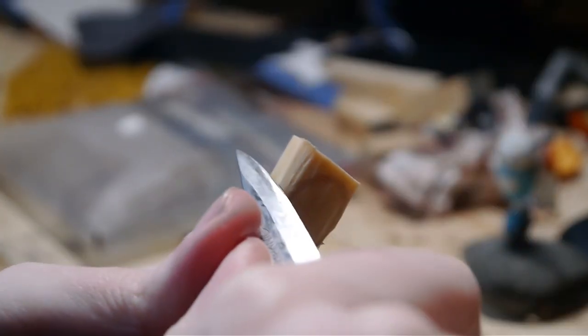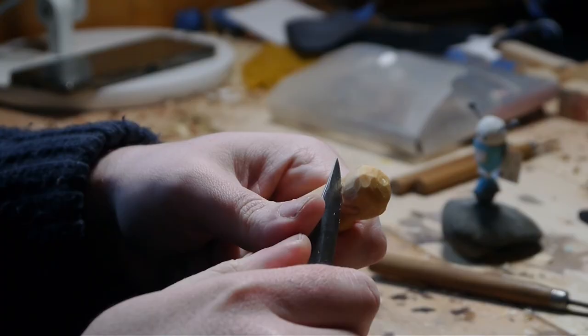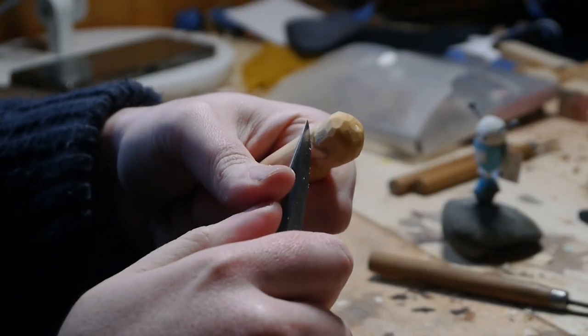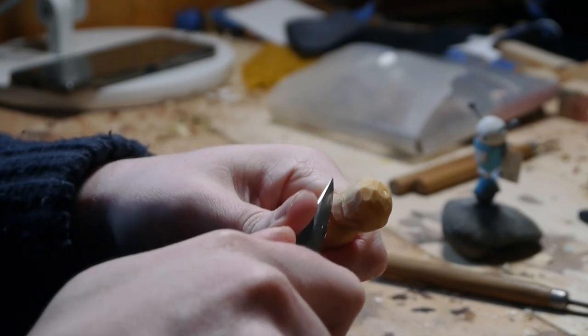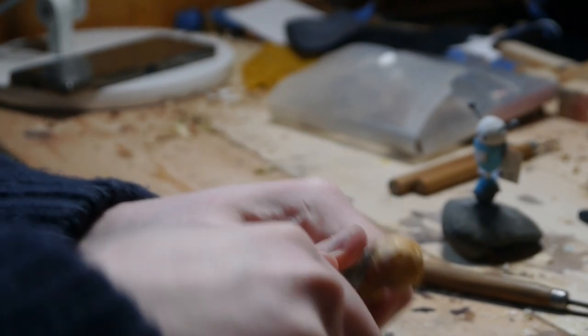This can be avoided by drying the wood more slowly in a bag of wood shavings or draping a damp cloth over it when not working on it. At the moment I'm working on the head of my second robot.